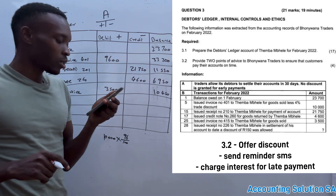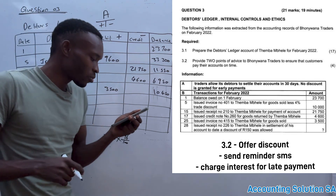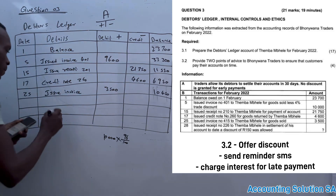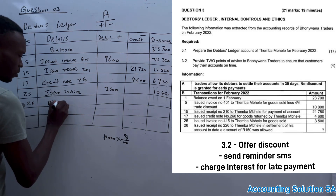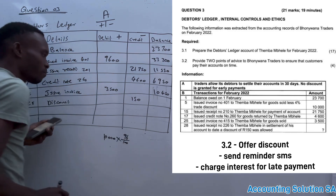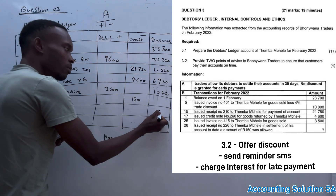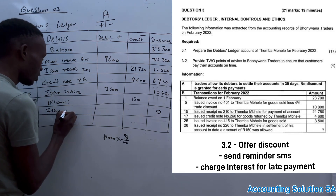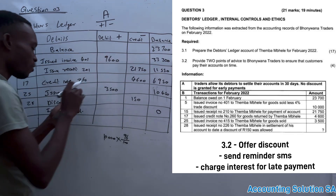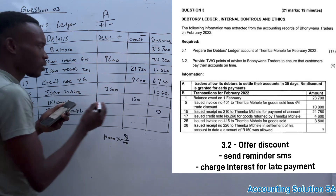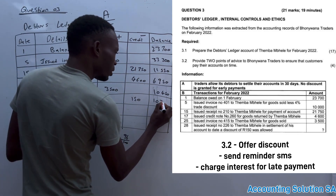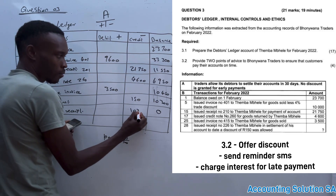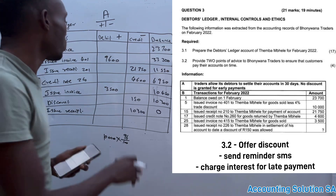The last transaction: issued receipt number 226 to Tembambele in settlement of his account to date. A discount of R150 was allowed. We record the discount first, then the receipt. After subtracting the discount of R150 from R10,450, we get R10,300. He then makes a payment of the full R10,300, because the balance must be zero — he has paid all his debt.